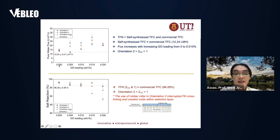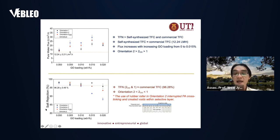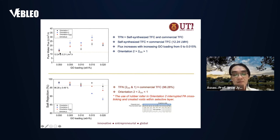We studied the impact of graphene oxide loading from 0 to 0.2% and the effect of orientation. The first graph shows pure water flux of the membrane and the second shows salt rejection — the salt here refers to NaCl. Our TFN membranes always have higher flux compared to self-synthesized TFC and commercial membranes. Our self-synthesized TFC membrane has similar flux to the commercial TFC membrane at zero loading. The flux of the membrane increases when you increase the graphene oxide loading from 0 to 0.015%.